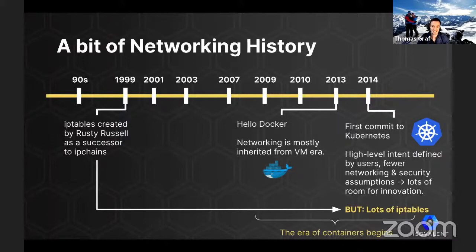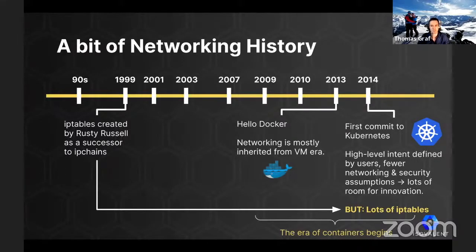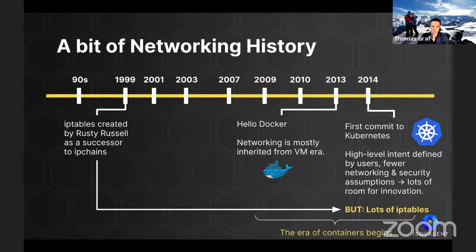In 2014, something exciting happened — the first commit to Kubernetes. Kubernetes was obviously not the first to attempt to translate high-level user intent into infrastructure automation, but it made unique choices to make a lot fewer assumptions in networking, security, and many other aspects which define how infrastructure is configured. For example, there is no concept of a network or subnet in Kubernetes. This allowed for massive innovation — the era of containers begins. But Kubernetes also heavily relied on IPTables, which was, at the time, the most widely available way to perform networking or filtering on Linux. IPTables was created while some of us still used dial-up modems, so it's not surprising that its underlying design is not a perfect match for modern cloud-native workloads.